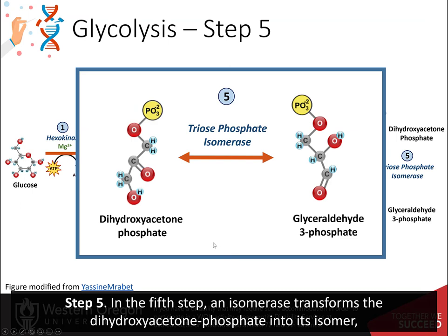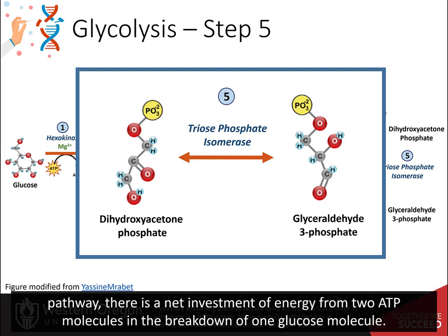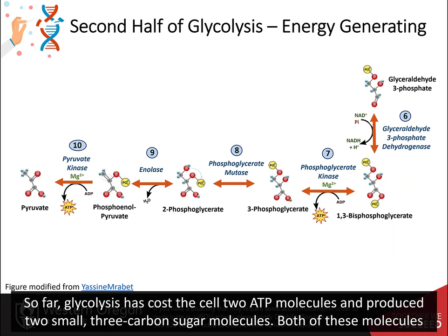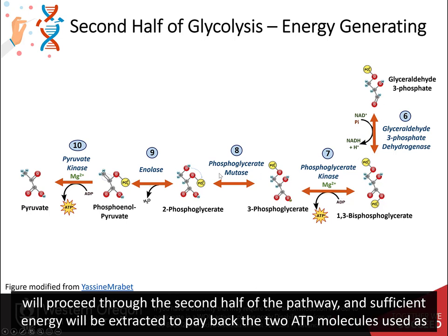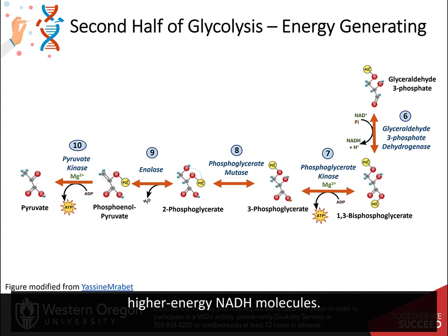Step five. In the fifth step, an isomerase transforms the dihydroxyacetone phosphate into its isomer, glyceraldehyde-3-phosphate. Thus, the pathway will continue with two molecules of glyceraldehyde-3-phosphate. At this point in the pathway, there is an investment of energy from two ATP molecules in the breakdown of one glucose molecule. So far, glycolysis has cost the cell two ATP molecules and produced two small 3-carbon sugar molecules. Both of these molecules will proceed through the second half of the pathway, and sufficient energy will be extracted to pay back the two ATP molecules used as an initial investment and produce a profit of two additional ATP molecules and two even higher-energy NADH molecules.